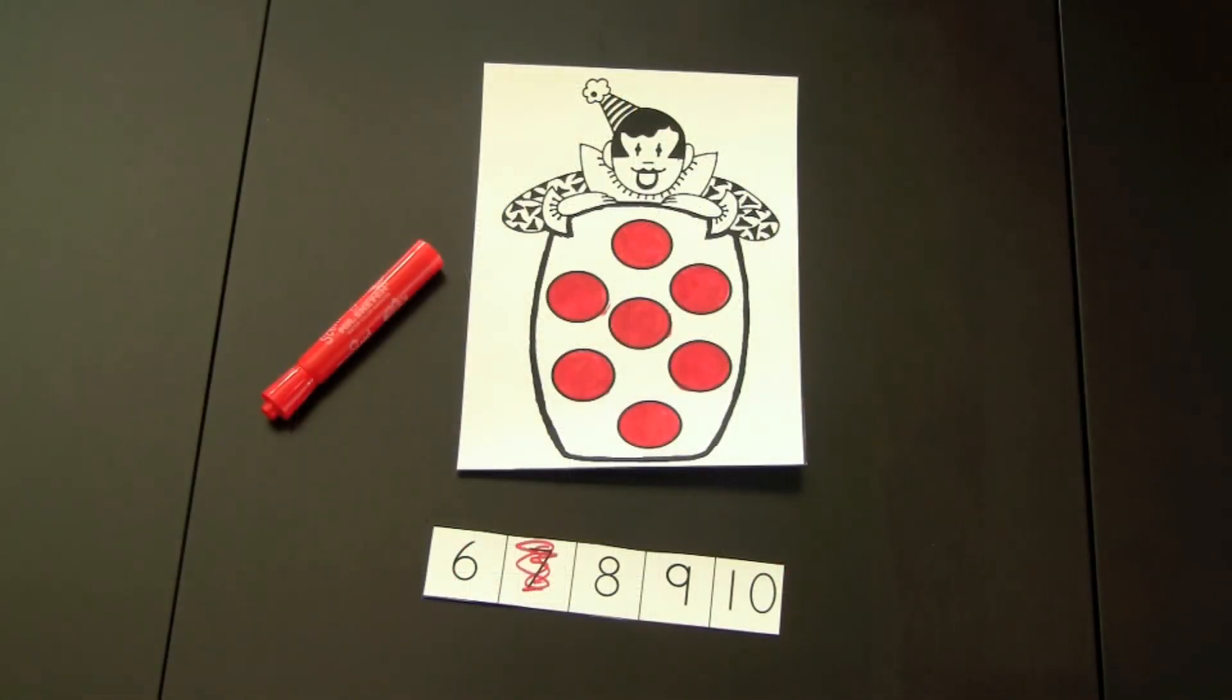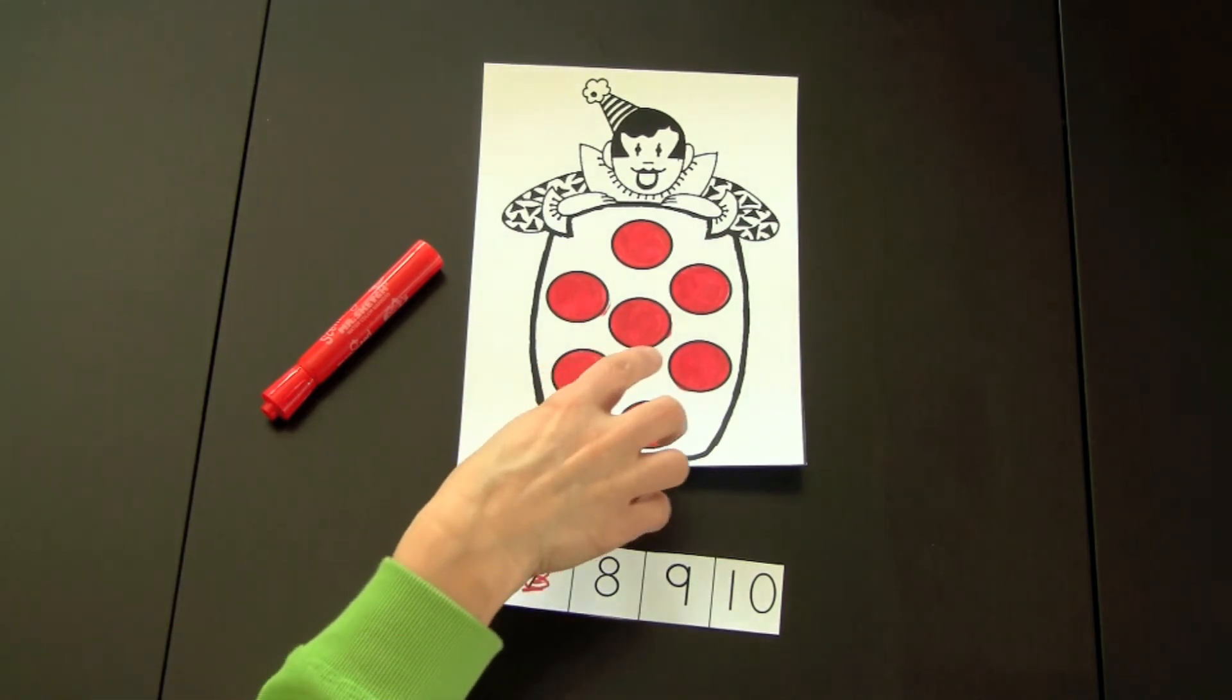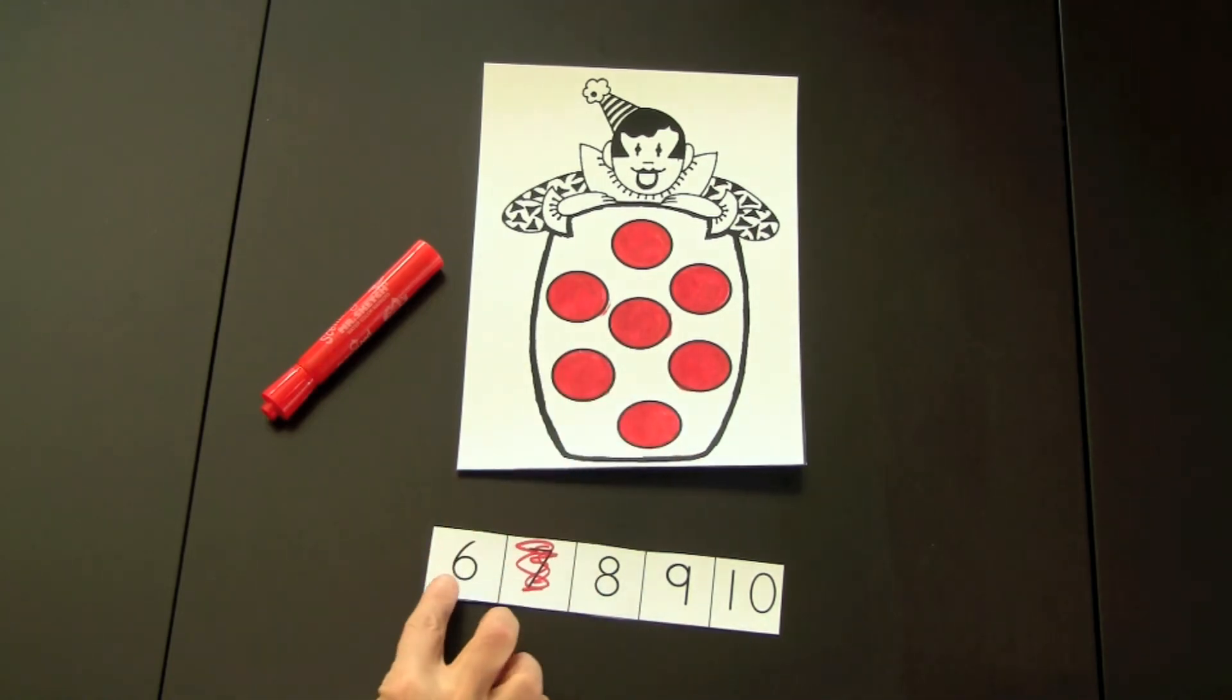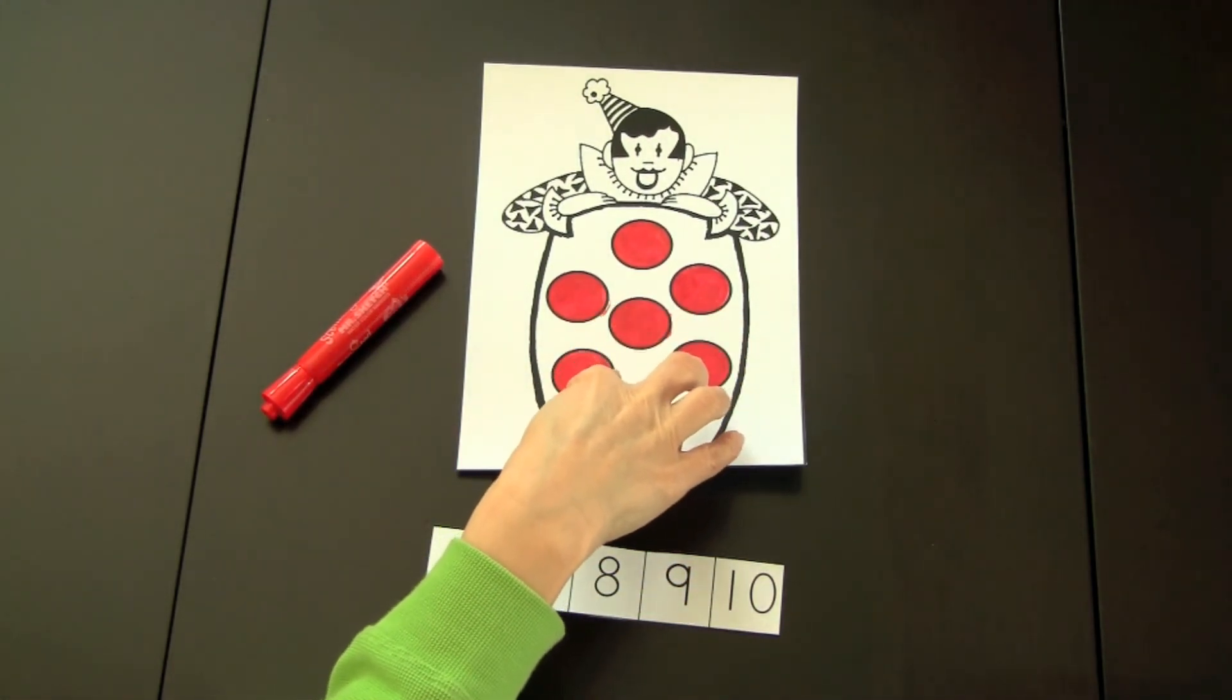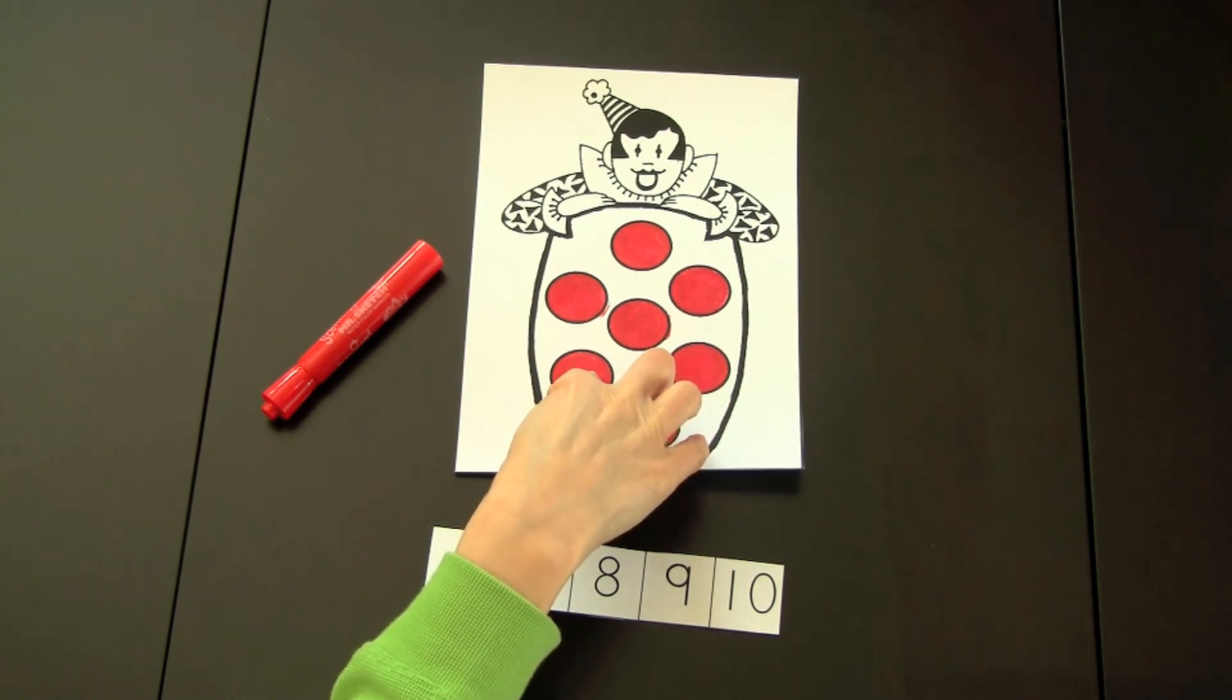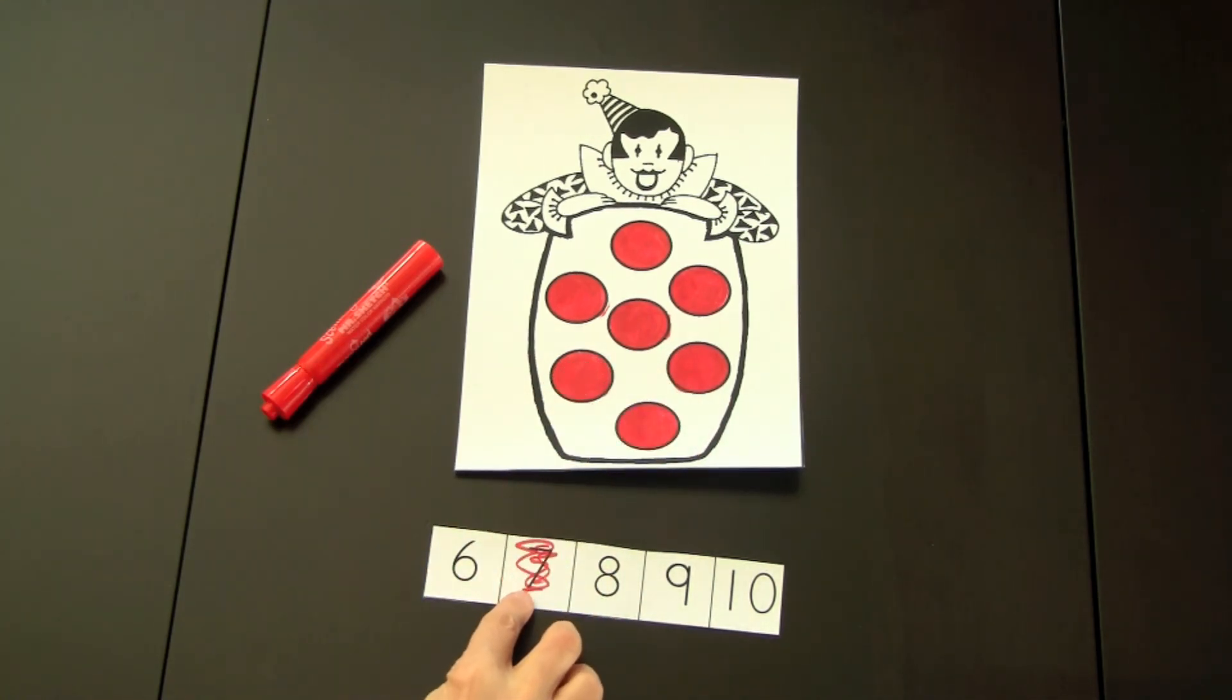This activity would be used as an assessment tool and includes numbers up to 20. For example, the clown has seven circles, so the children would have their number board and count the number of circles, notice the color, and color the numeral that matches that color.